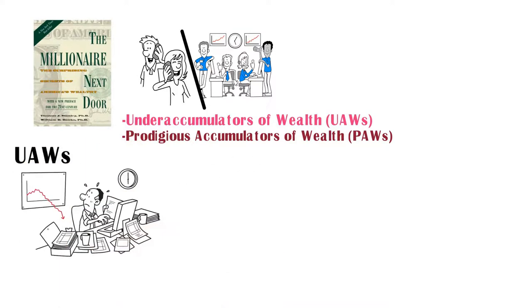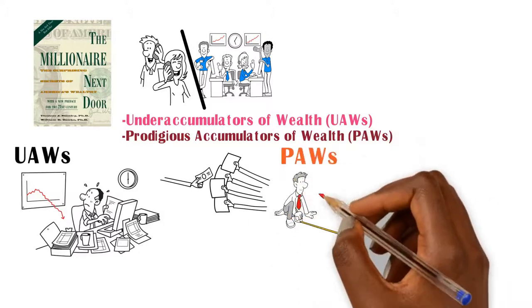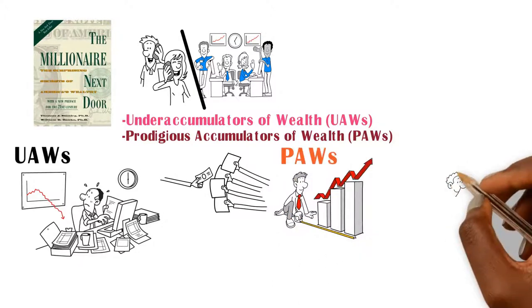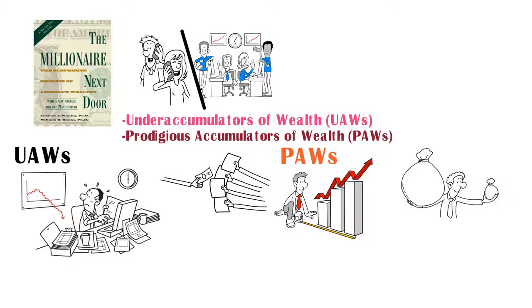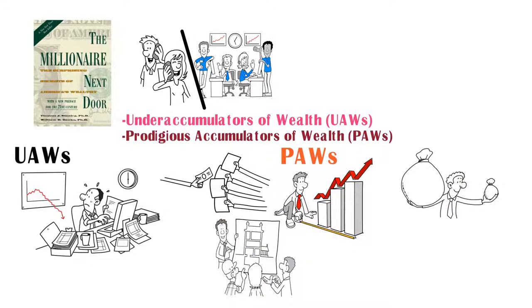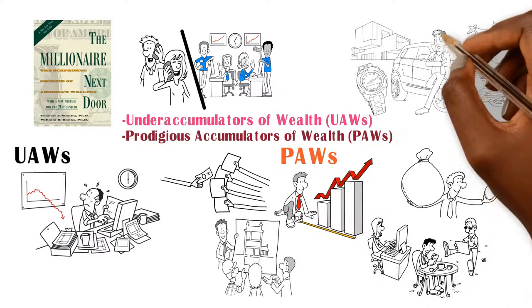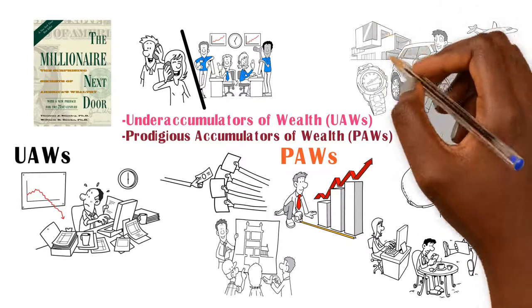UAWs have a low net worth relative to income, and the opposite is true for PAWs. PAWs grow wealthy by living well below their means. These are people who do not fit into the stereotype of millionaires. They live in modest neighborhoods, drive practical sedans, and have blue-collar jobs, as opposed to the expensive lifestyle associated with the idea of a millionaire.